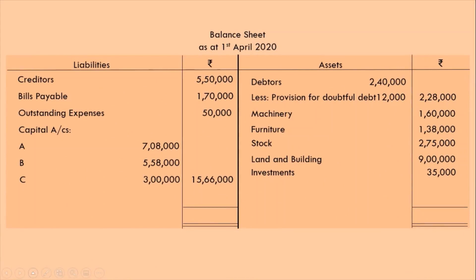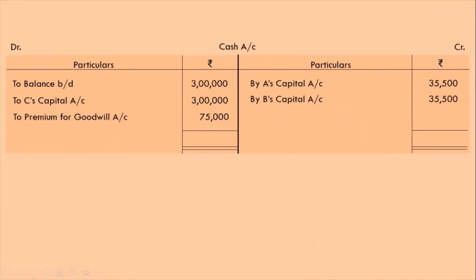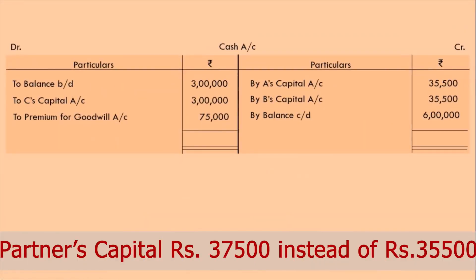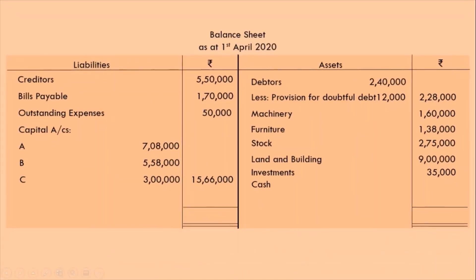Let's come to our balance sheet and record the capitals of A, B, and C. We get a total of Rs 15,66,000. Then let's balance the cash account: opening balance Rs 3 lakh + C's capital Rs 3 lakh + premium for goodwill Rs 75,000 − withdrawals Rs 37,500 − Rs 37,500 = Rs 6 lakh. Record cash Rs 6 lakh in the balance sheet.